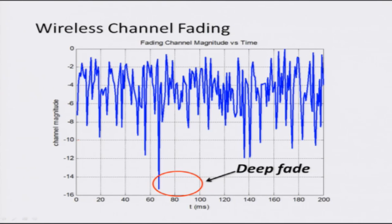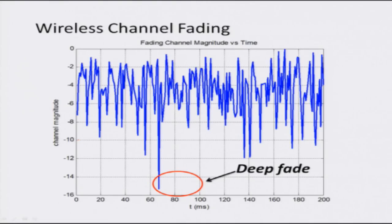This picture shows the fading channel magnitude as a function of time. At some instances you have a really good signal strength, but at other instances the signal strength dips far below the acceptable threshold — that is known as a deep fade. It's important to keep this physical aspect of wireless communication systems in mind. We'll stop this basic module here and take up a systematic, brief study of other aspects in subsequent modules. Thank you very much.